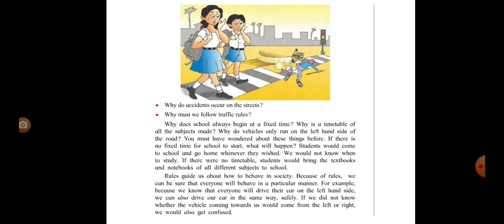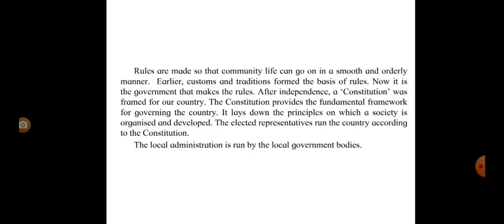Why do accidents occur on the streets? Why must we follow traffic rules? Why does school always begin at a fixed time? Why is the timetable of all the subjects made? Why do vehicles only run on the left-hand side of the road? If there is no fixed time for school to start, students would come to school and go home whenever they wished, and we would not know when to study. If there were no timetable, students would bring the textbooks and notebooks of all different subjects to school. Rules guide us about how to behave in society. Because of rules, we can be sure that everyone will behave in a particular manner. For example, because we know that everyone will drive their car on the left-hand side, we can also drive our car in the same way safely. If we did not know whether the vehicle coming towards us would come from the left or right, we would also get confused. Rules are made so that the community life can go on in a smooth and orderly manner.